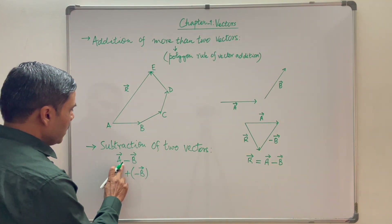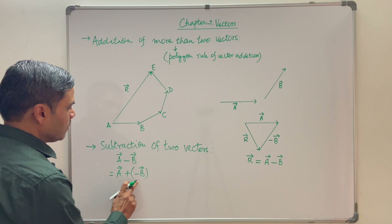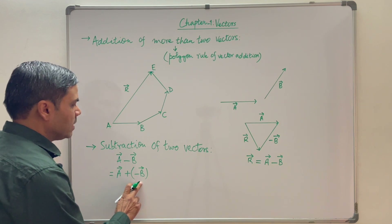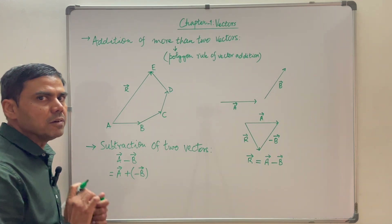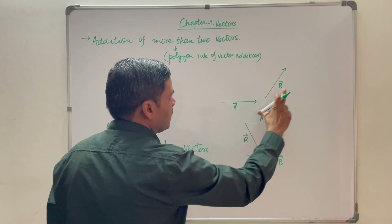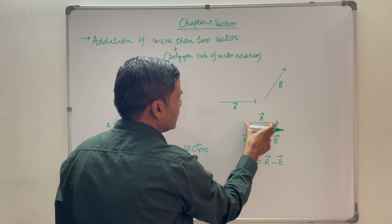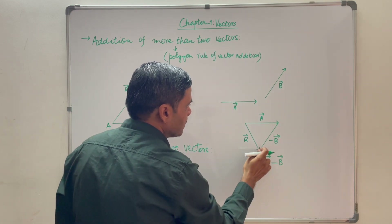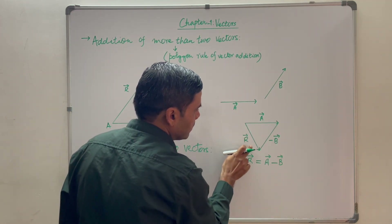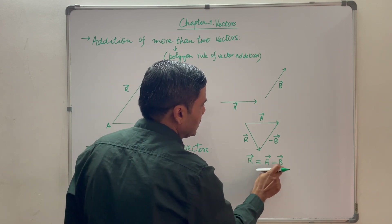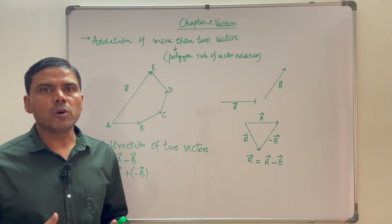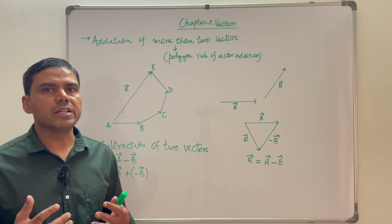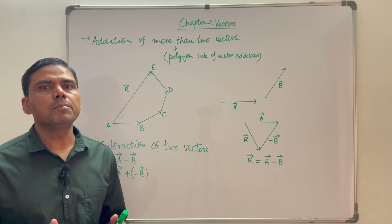Now let us understand subtraction of two vectors. Vector A minus B can be rewritten as vector A plus (−B). This means vector A has to be added with vector B with its direction reversed. So if vector A is here and vector B is this, then adding A and (−B) gives resultant R, and R equals A minus B. In the next video we will talk about resolution of vectors and product of vectors. If you have a question, you can ask me on my Discord server. If you have not subscribed to my YouTube channel yet, please do so.